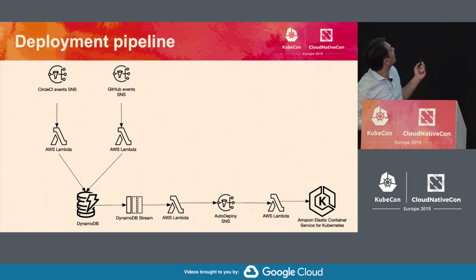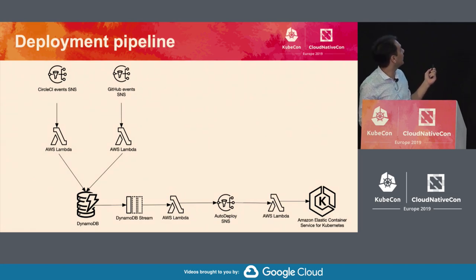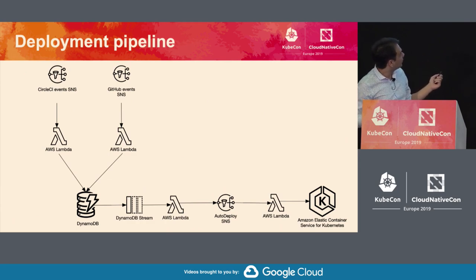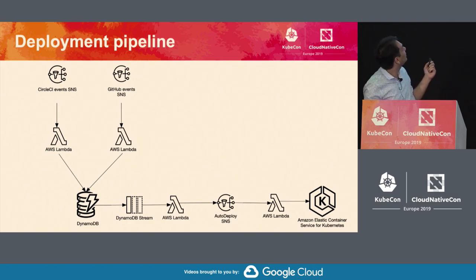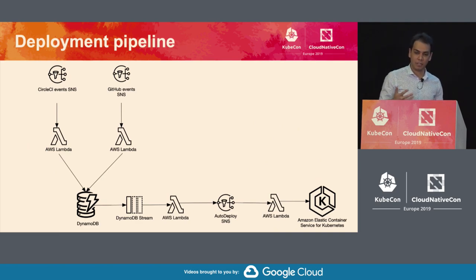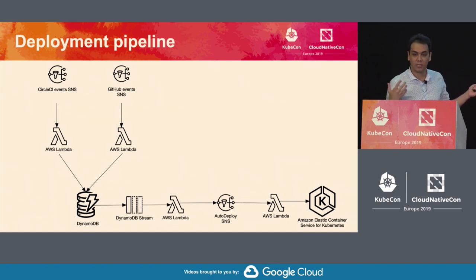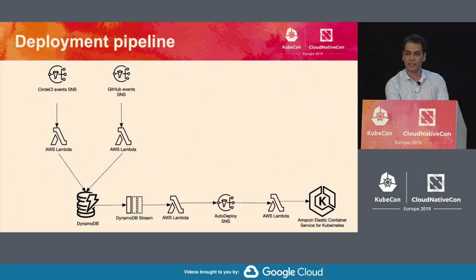Here's how the flow works: the GitHub event goes to a Lambda that puts it in DynamoDB. An event from DynamoDB triggers the promoter Lambda, which says this is not ready to be promoted because we don't have an image yet. A little while later, the CircleCI event arrives, goes into DynamoDB, and the promoter Lambda says it has an image and can deploy. It puts a message into another SNS, which is picked up by Lambda and deployed to EKS using Helm.